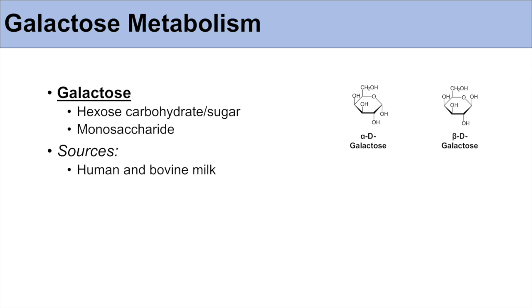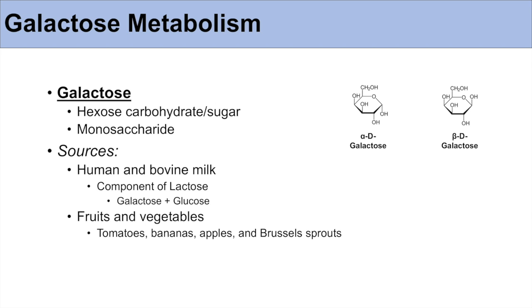Well, some of the dietary sources of galactose include human and bovine milk in the form of lactose. So lactose is simply a disaccharide consisting of galactose and glucose. Now we don't think about getting galactose in other dietary sources, but we can actually get free galactose in fruits and vegetables. And some of these include tomatoes, bananas, apples, and Brussels sprouts.